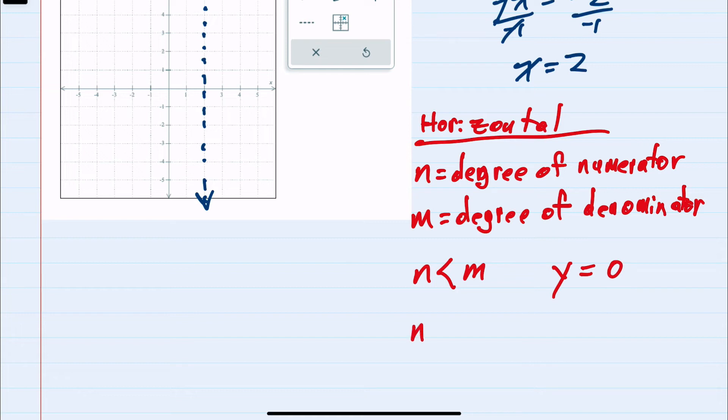If both n and m are the same, so the same degree in the numerator and the denominator, our asymptote would just be y equals the fraction, where that fraction is the leading coefficient of the top over the leading coefficient of the bottom.